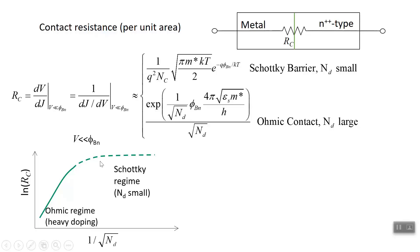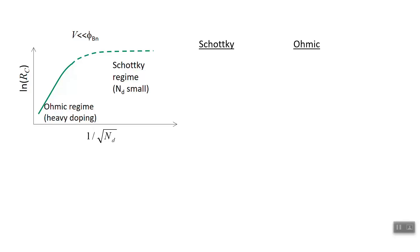If we graph the logarithm of contact resistance versus one over the square root of doping, from very heavy doping to very light doping, we see a continuous transition from the ohmic regime to the Schottky regime. For an ohmic contact with very heavy doping, the logarithmic behavior is linear. In the Schottky barrier regime — small doping — the contact resistance is independent of the doping level, because doping doesn't appear in the expression, so it levels off.